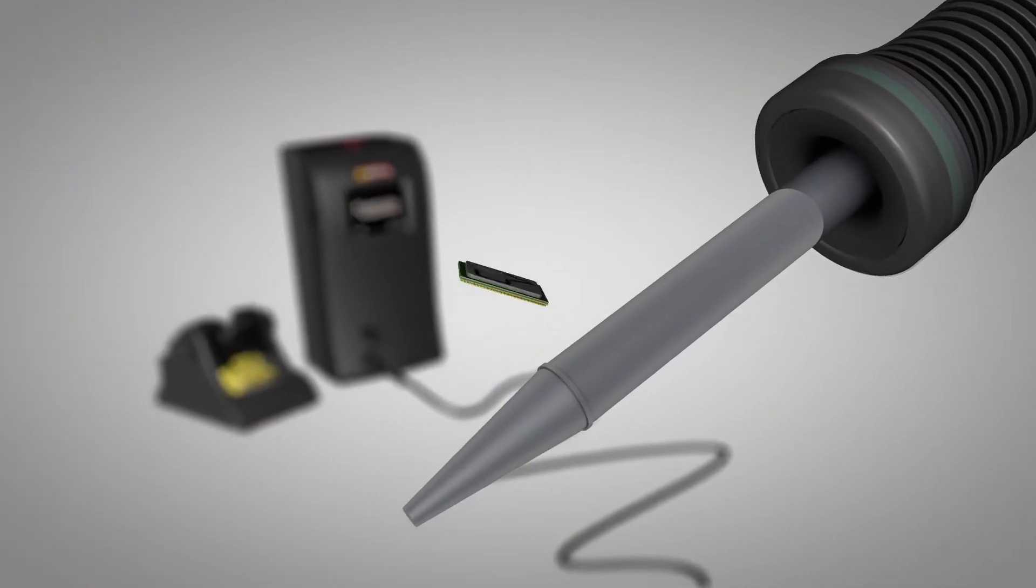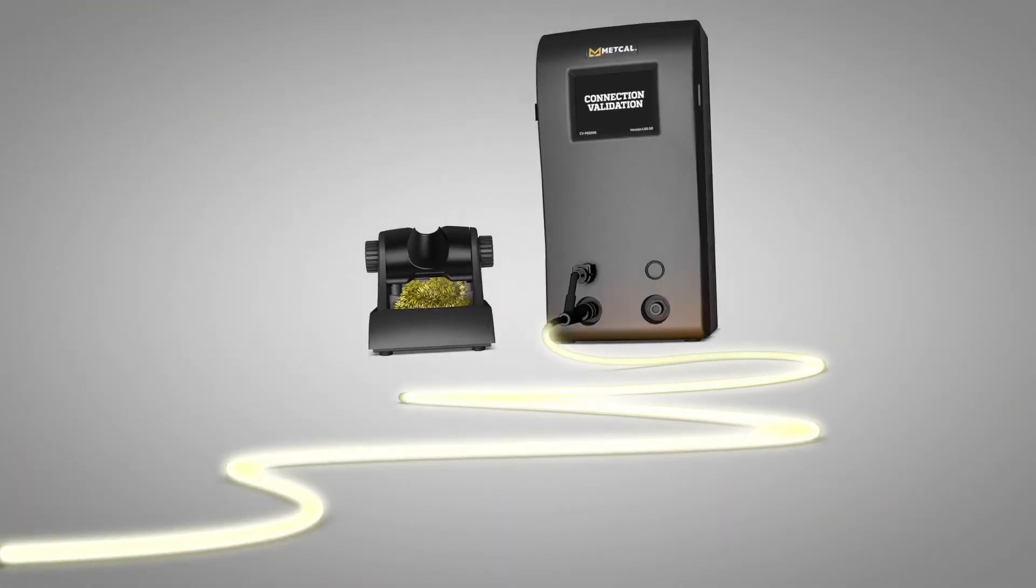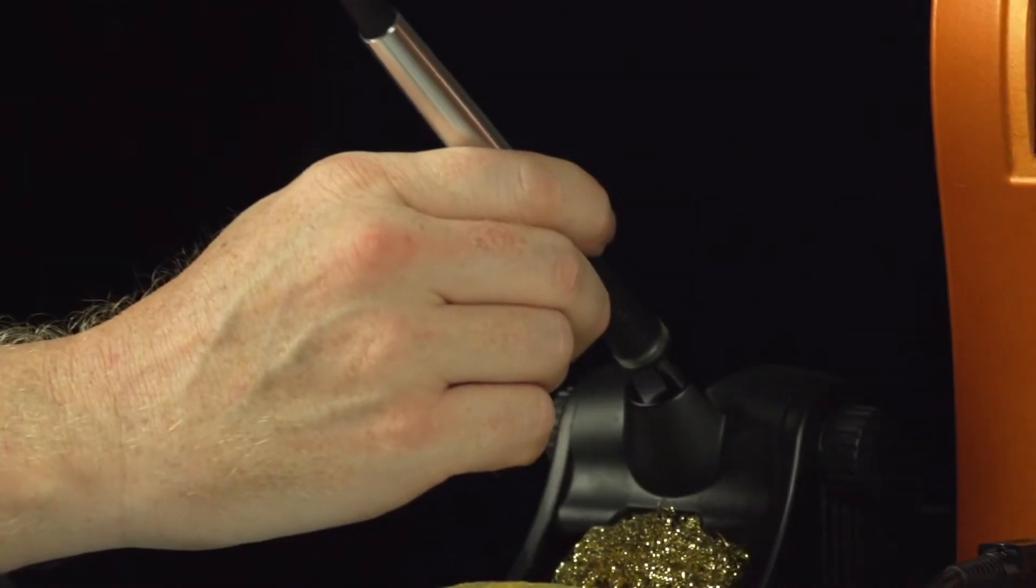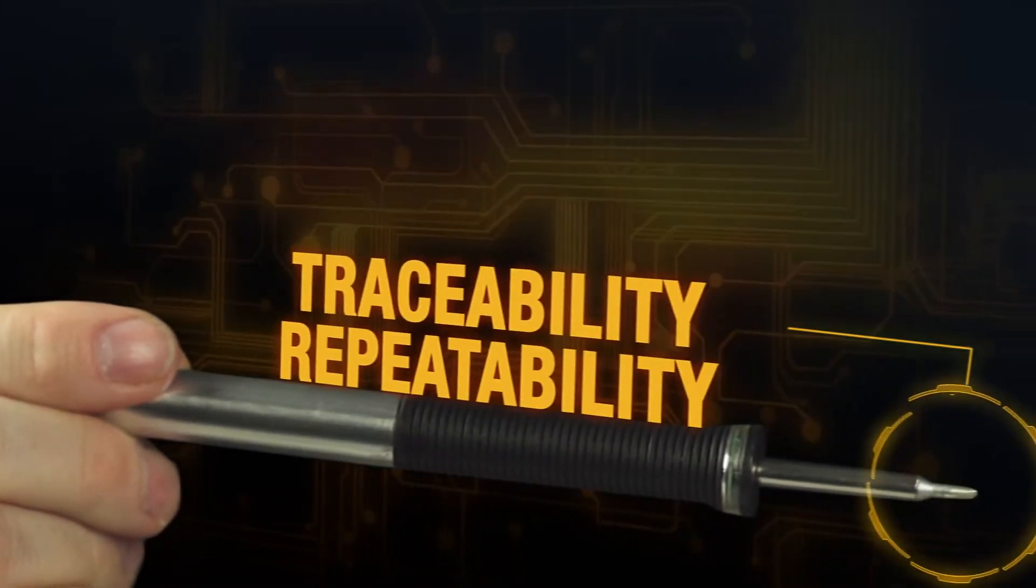Using patented chip and cartridge technology, the Metcal Connection Validation system enables bi-directional communication between the cartridge and the power supply. This innovative chip and cartridge technology delivers traceability information to the user.